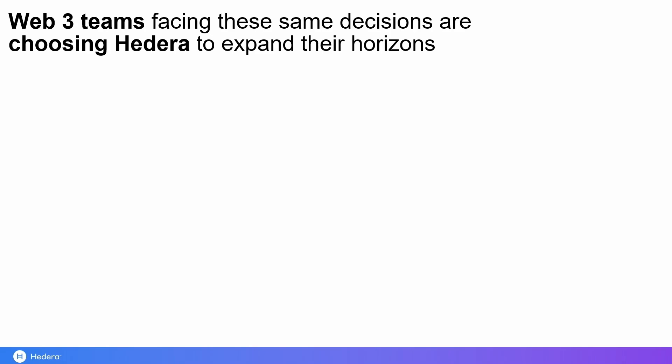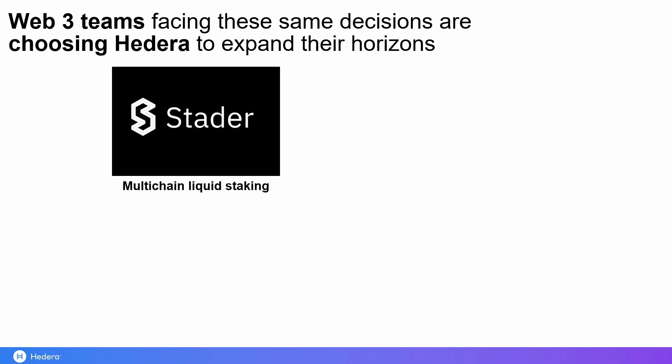So what are other teams out there doing? Fortunately, other teams have also gone through this process, and many of them are choosing Hedera as the platform to migrate or deploy their cross-chain applications on. Here are a few examples. We have Stator, a multi-chain liquid staking platform that has deployed on other networks like Avalanche, Near, Phantom, and a few others. Over the past year, they have decided to expand their horizons on the Hedera network as well, and now they hold a significant portion of the TVL on the network.